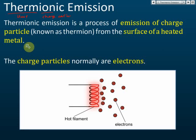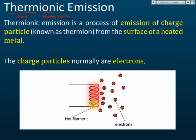For example, we have a hot filament — we use electricity to heat the filament, and up to a certain temperature, electrons will be released from this hot filament. This is called thermionic emission.